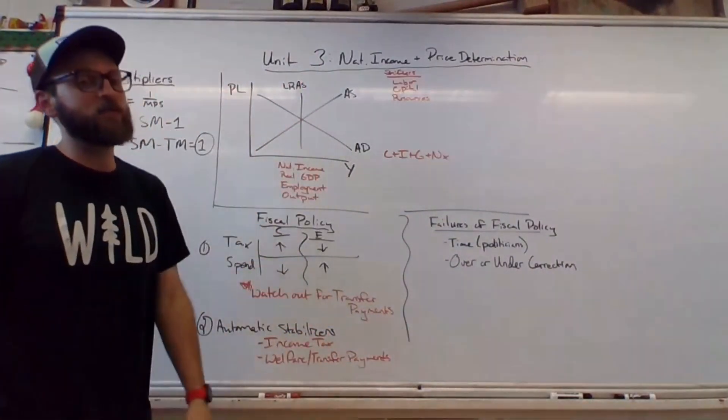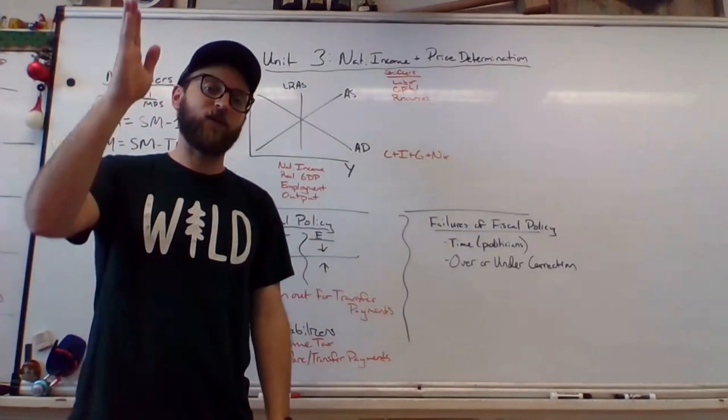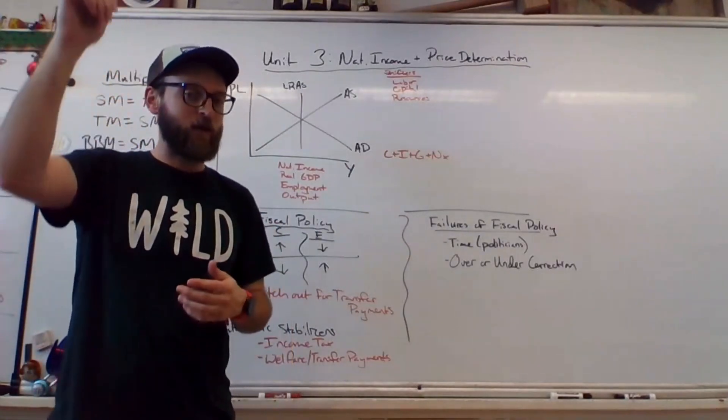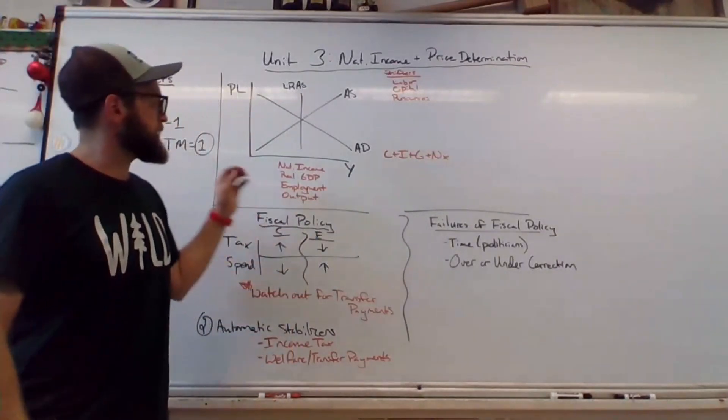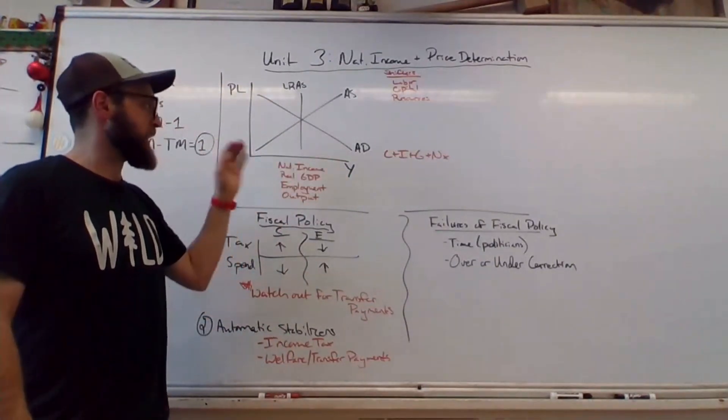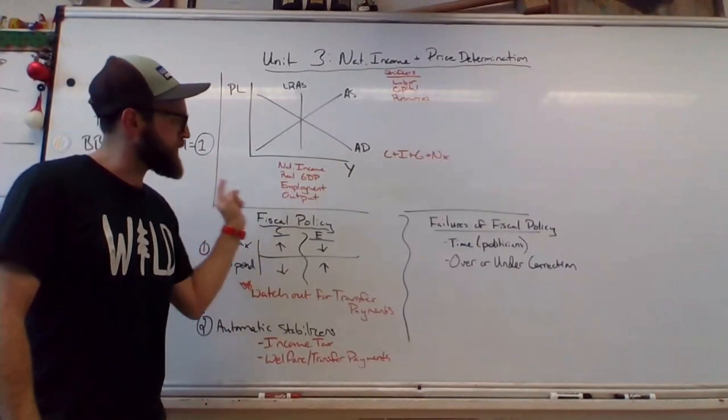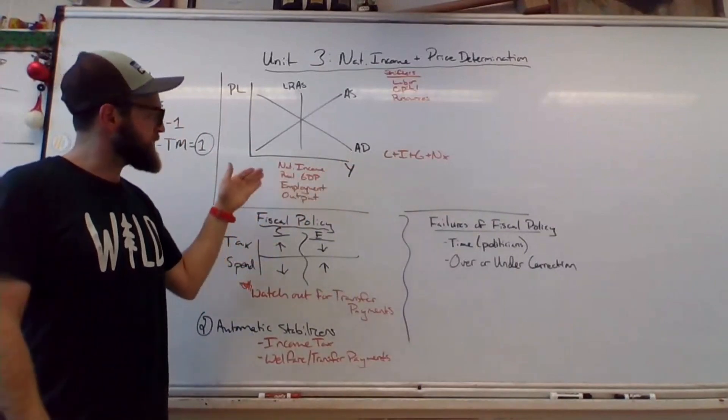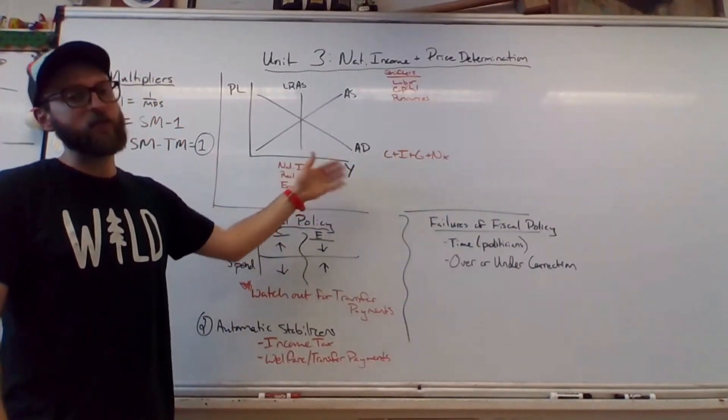On the vertical axis, it's price level. This is just the idea that as we go up on the vertical axis, things cost more, and as we go down, they cost less. Nothing too crazy. On the horizontal axis, we have this capital Y, which refers to national income, real GDP, employment output. Anytime we're going that way or to the right, these things increase. So generally, that's a good thing.